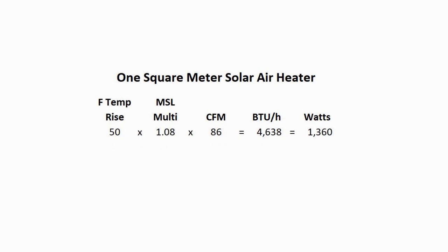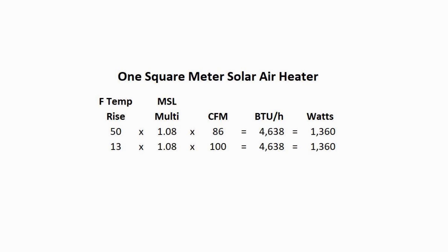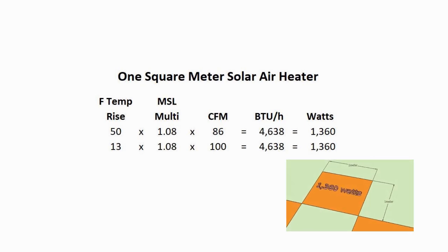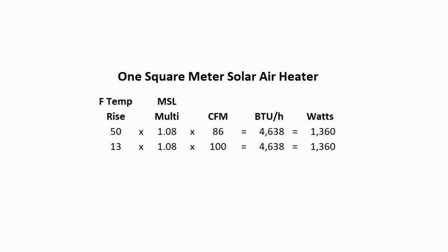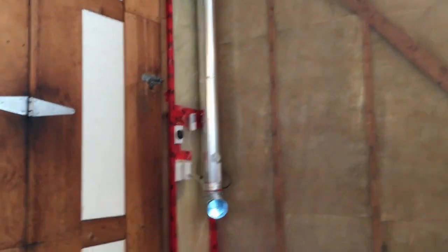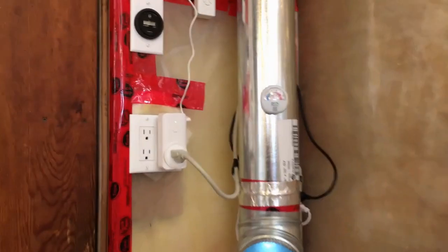If I want to use a stronger fan and move 100 cubic feet per minute of air through the same 100% efficient solar unit, I know mathematically that my temperature will drop from 50 degrees to 13. Why? Because we can't generate more energy than what the sun can provide — all that is available is 1,360 watts. If you increase the air flow, you decrease the temperature rise. If you increase the temperature rise, you decrease the air flow. My solar air heater is not 100% efficient — I may only be getting 1,000 or 900 watts per square meter due to poor conduction heat transfer.